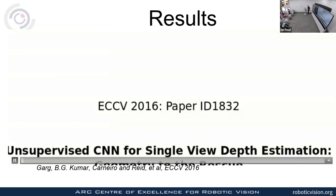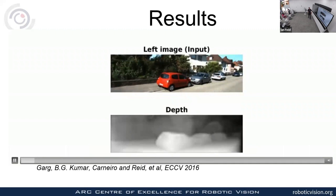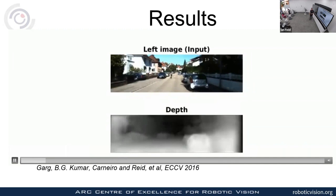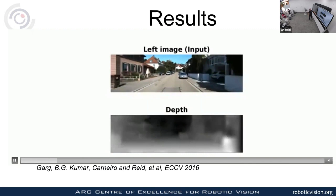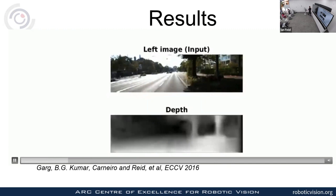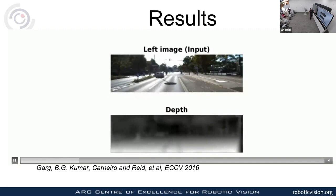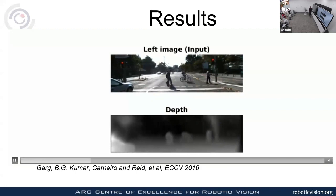These are Ravi's early results from 2016. The input goes to the neural network and the predicted depth is shown — lighter is closer, darker is further away. What I found remarkable was that moving pedestrians, for example, are actually visible and extracted in the depth map as well.